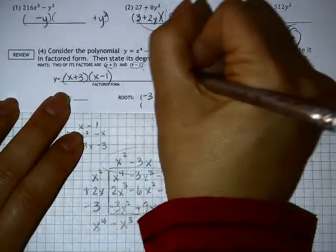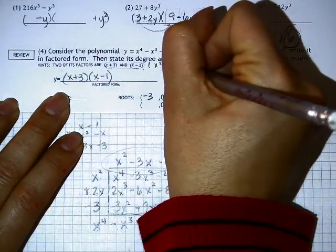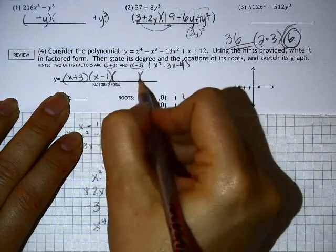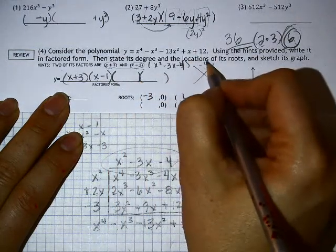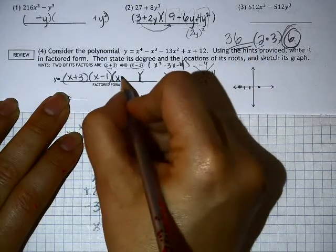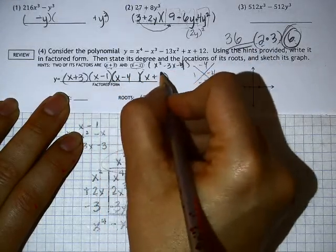And this would be my other factor so far. Then I need to actually factor that guy. So I have negative 4, negative 3. So that would be negative 4 and 1. So x minus 4 and x plus 1.